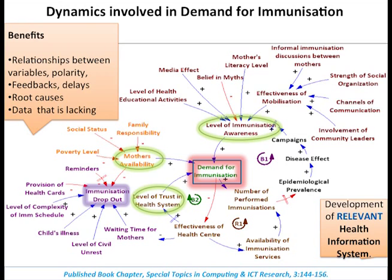You're able to see the relationships, feedbacks, and delays, and you're able to see the root causes. For example, if it's the demand for immunization, what are the key things that need to be done for mothers to take their children for immunization? One important thing we found was that you can discover data not being captured by the health information system, and what systems need to be developed to improve the effectiveness of immunization.